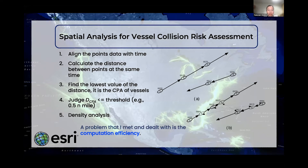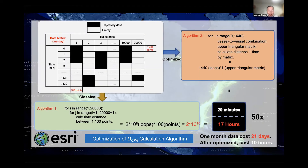During the implementation, I encountered a problem of computation efficiency. The data for the whole water area is big data — for only one day, there are around 20,000 vessels sailing on the water. The frequency of location data is around one point per minute, so there are around 1,440 minutes per day. This is data with both a trajectory and time domain, and for each vessel there are around 100 location points on average.